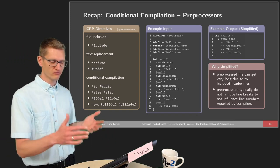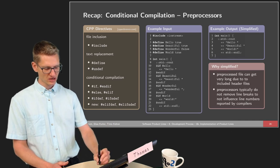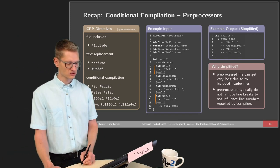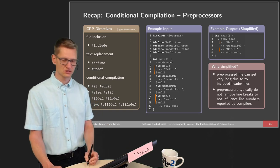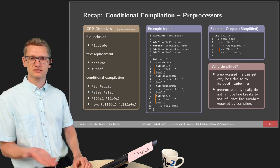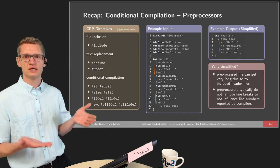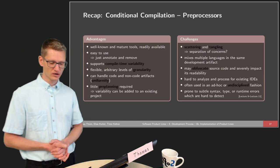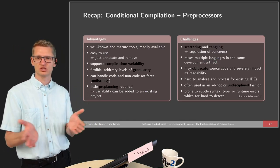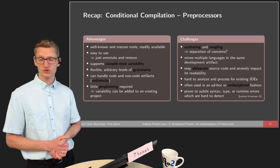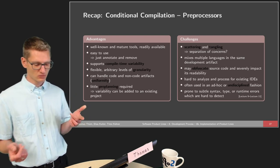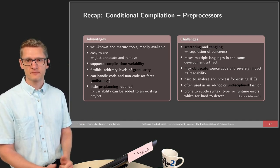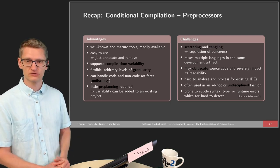With preprocessors we can have more fine-grained mappings — a certain part of the code is mapped to feature 'hello' or feature 'world', and we can remove certain parts depending on which features are included in a configuration. A file is preprocessed before compilation, which is why this is also called conditional compilation. Advantages include well-known mature tools that are easy to use since we just annotate and remove parts. They support compile-time variability, flexible arbitrary levels of granularity — even very fine-grained variability — can handle code and non-code artifacts, and little pre-planning is required.